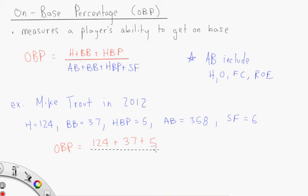All divided by the number of at-bats, which is 358, plus 37, plus 5, plus our sacrifice flies, which is 6.